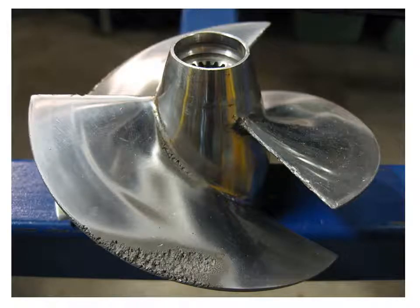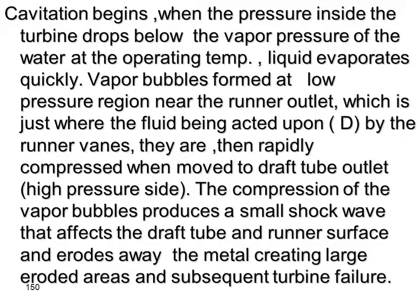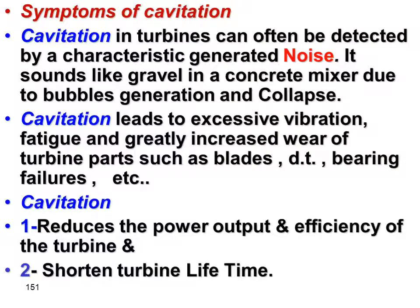Here is an axial flow turbine runner showing damage on the blade edges due to cavitation. We can also see damage at the leading and trailing edges of the runner blades. Cavitation also reduces the power output and efficiency of the turbine and shortens its lifetime.